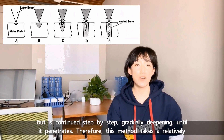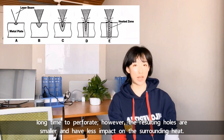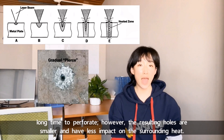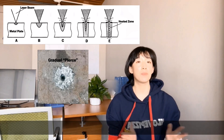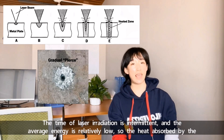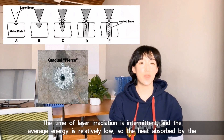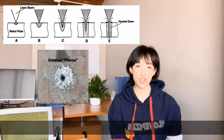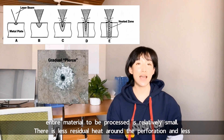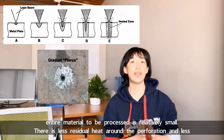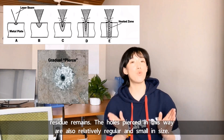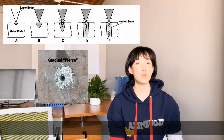Therefore, this method takes a relatively long time to perforate. However, the resulting holes are smaller and have less impact on the surrounding heat. The time of laser irradiation is intermittent and the average energy is relatively low, so the heat absorbed by the material is relatively small — that is, less residual heat around the perforation and fewer residues remain. The holes pierced this way are relatively regular and small in size.